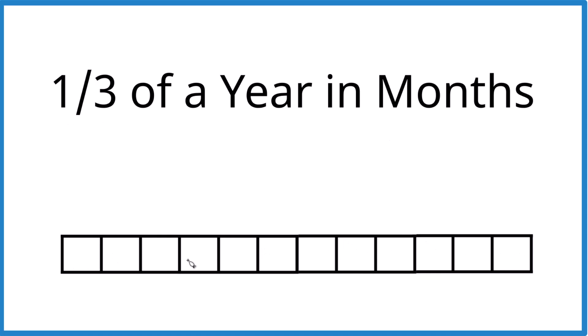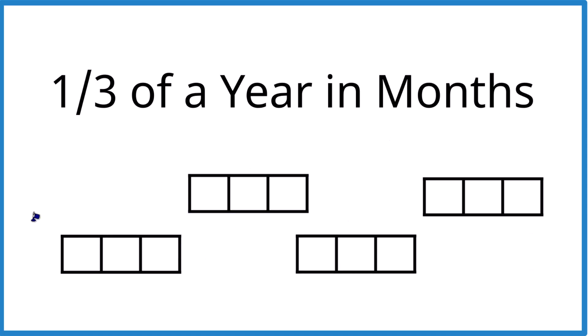So let's divide these up into groups of three, like this. Now that we have groups of three, let's fill in one of each of these groups—filling one, one, one, one. And if you count those months up, you'll get four. So one third of a year in months is four months.